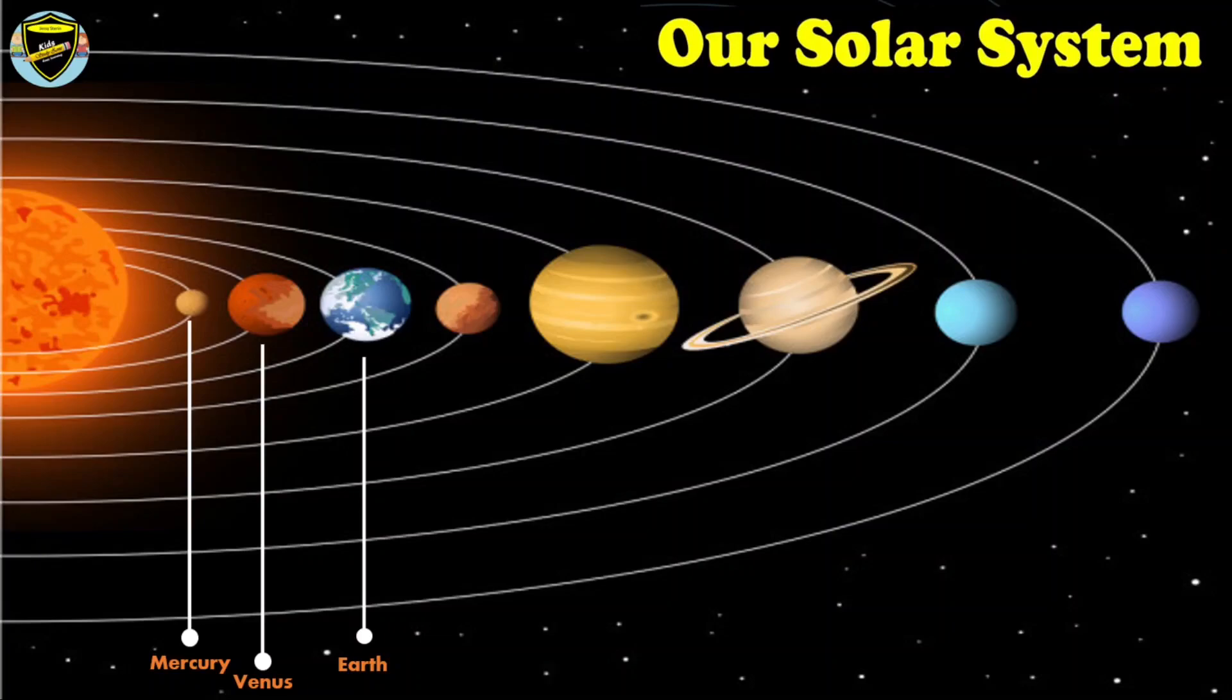The fourth planet in the solar system is Mars. Mars is also known as red planet.